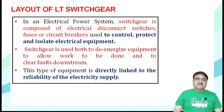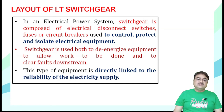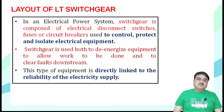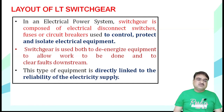As switching equipment, the circuit is saved. In the electrical power system — from generation to transmission to distribution — there are many switches involved. The switchgear is composed of electrical disconnect switches, fuses, and circuit breakers.